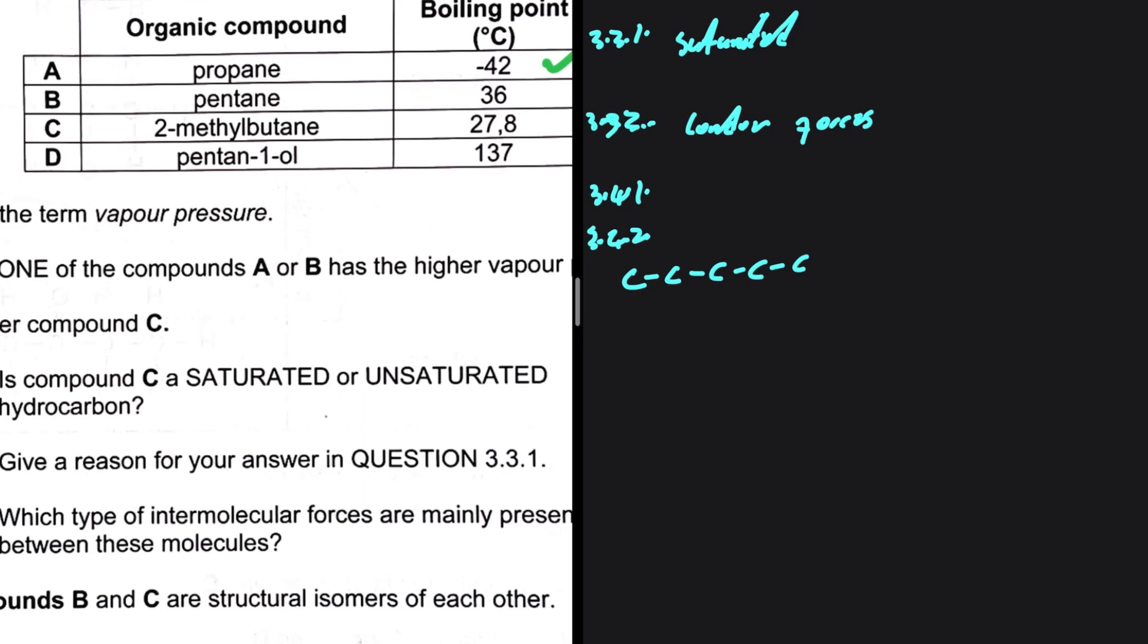While compound C on the other end we have 1, 2, 3, 4, 5. And a branch on the second carbon. How does compound B differ from compound C?